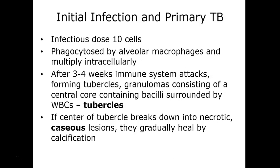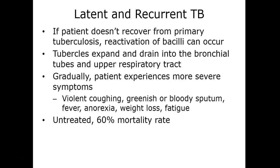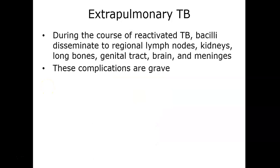If the patient doesn't recover from primary tuberculosis, the infection can reoccur. Tubercles gradually drain into surrounding lung tissue such as the bronchi, producing violent coughing, bloody sputum, fever, weight loss, and anorexia, with a mortality rate of about 60% if left untreated. Extra-pulmonary or disseminated tuberculosis occurs when the lung infection spreads to other organs — the lymph nodes, kidneys, long bones, and even the brain and meninges.